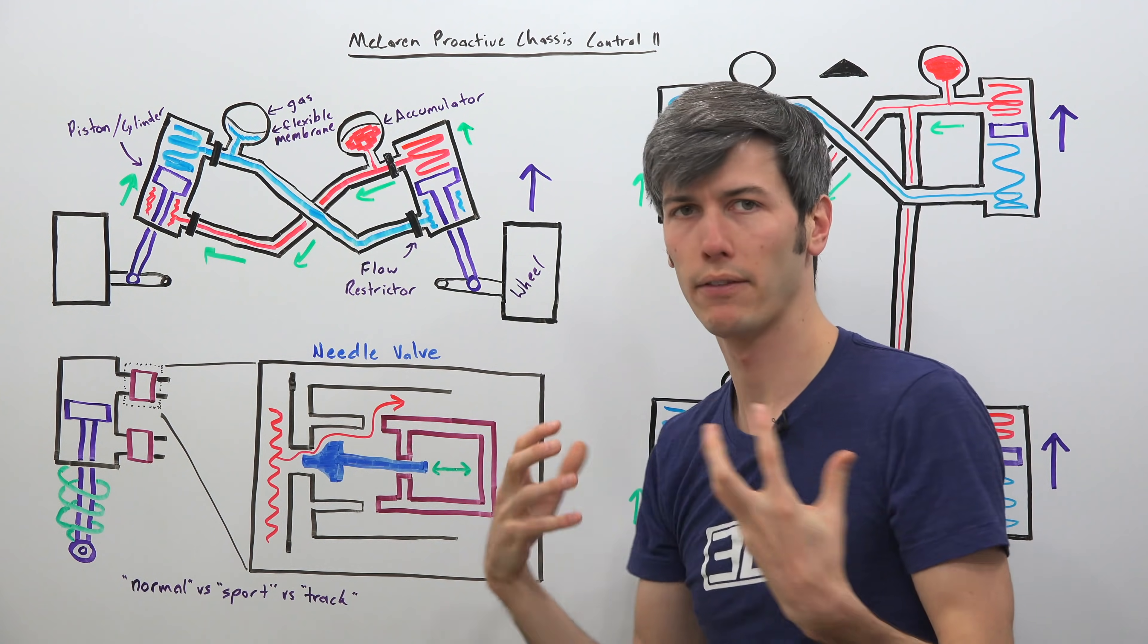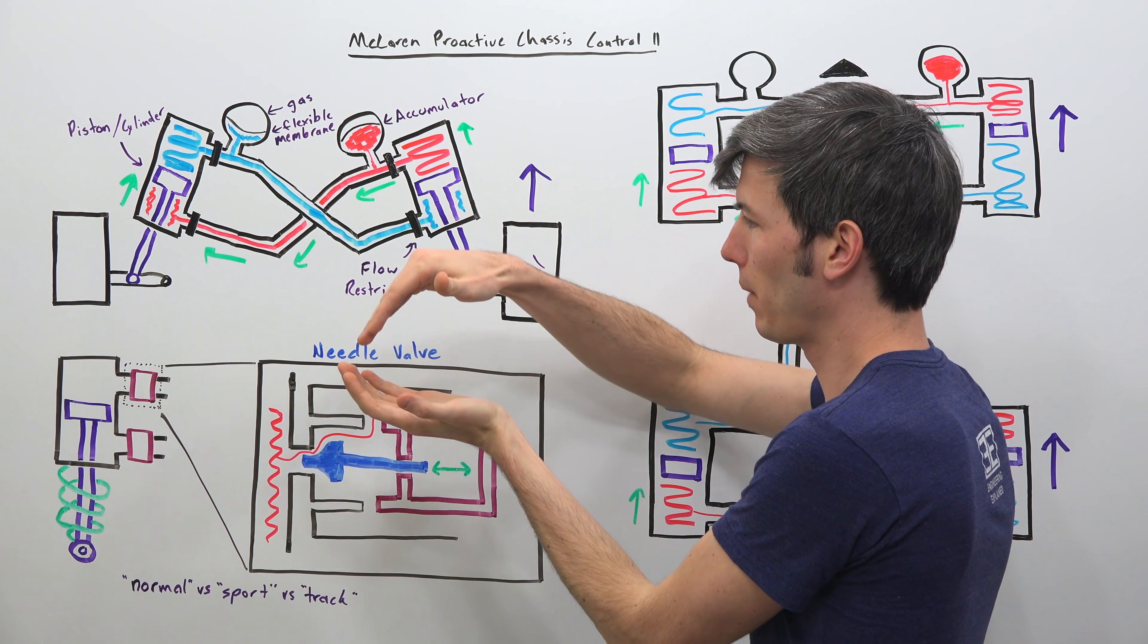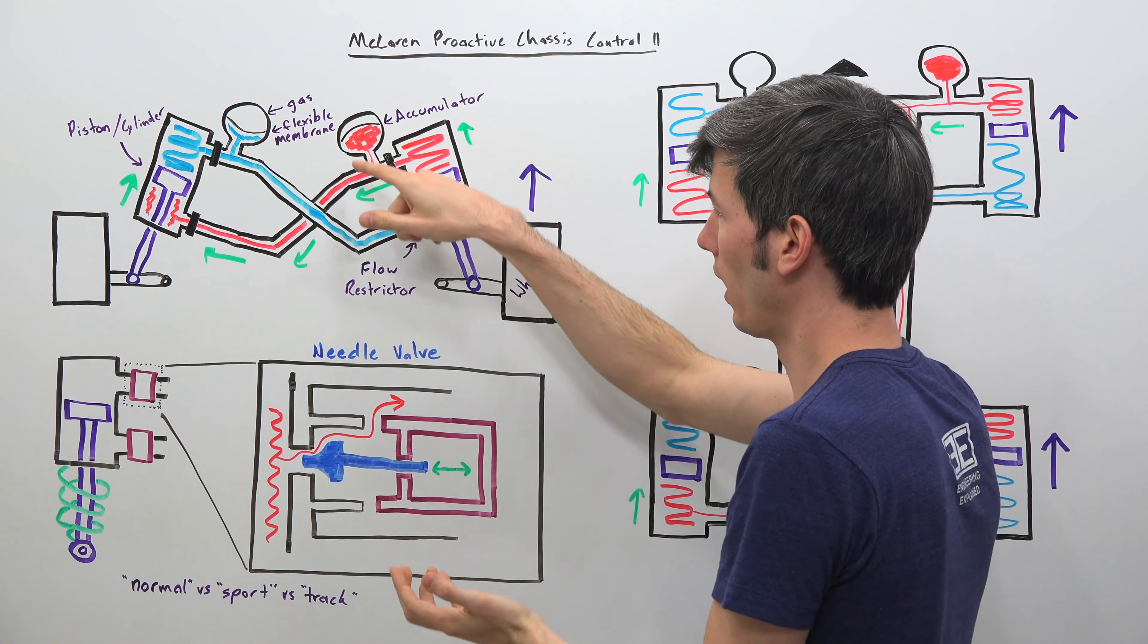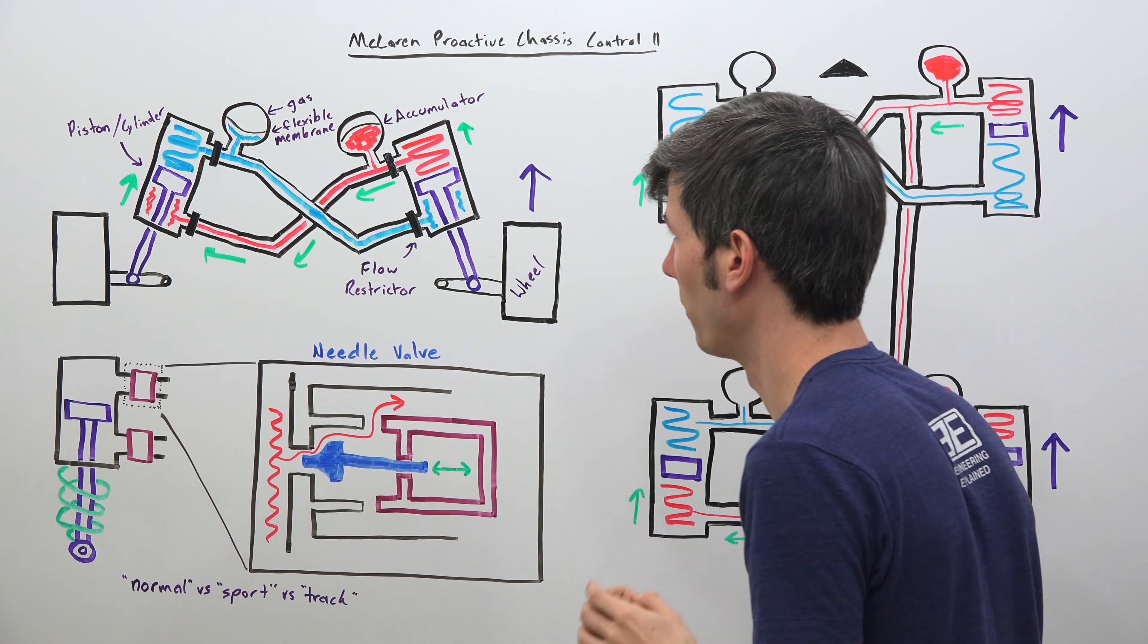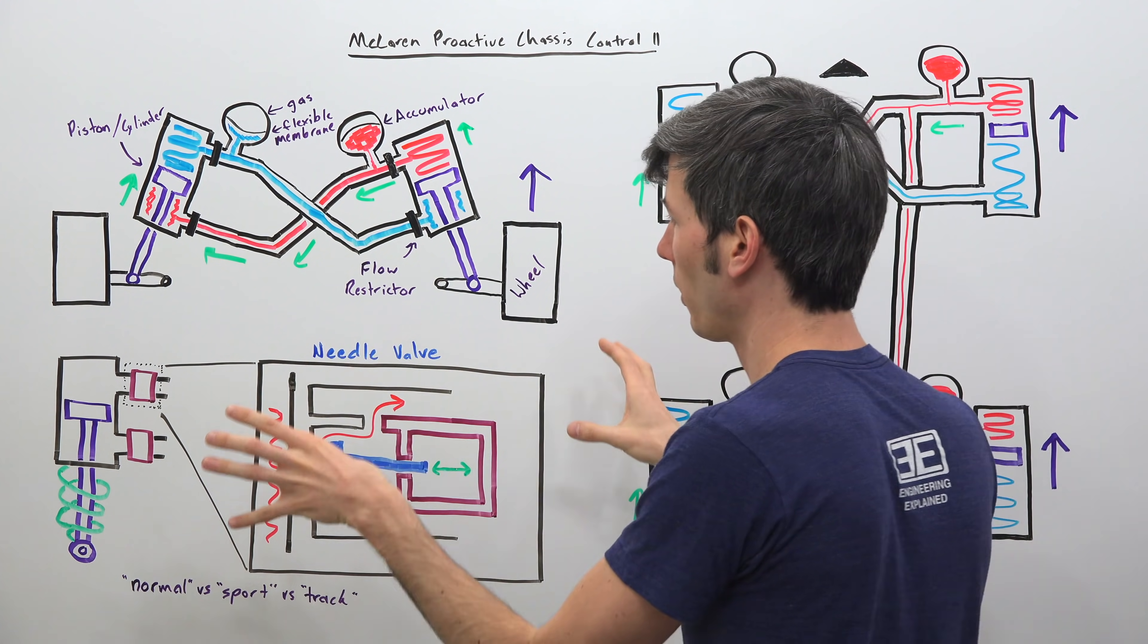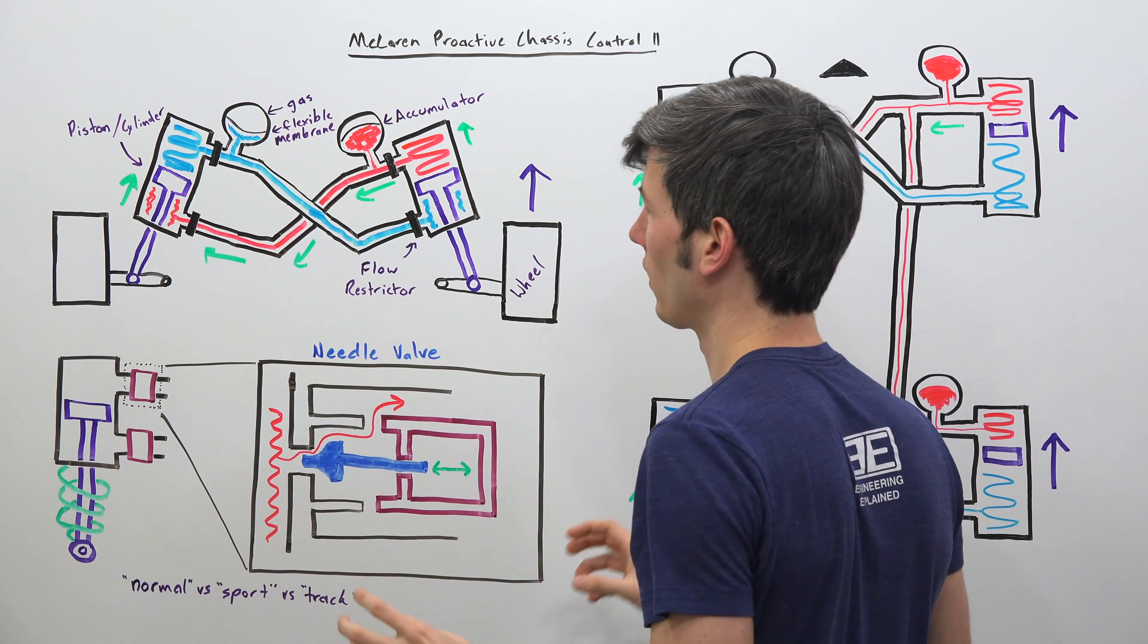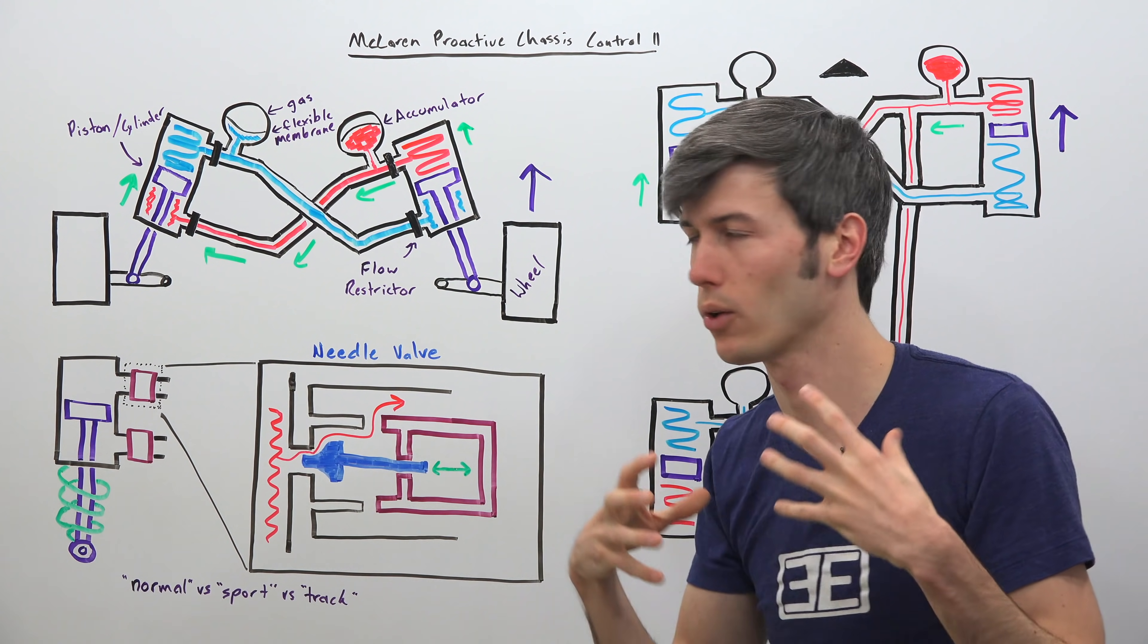So what this reservoir does is it allows for that fluid to go somewhere. If the pressure is too high it can push up on that membrane. That membrane is providing a resistance, a pressure to the overall system. So let's walk through a very simple scenario to understand why it's advantageous to link these two.